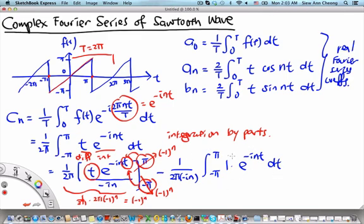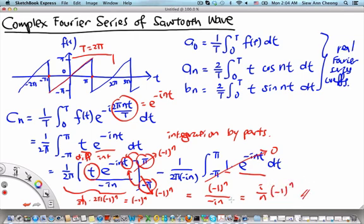Now for the second integral: since we differentiated t to get 1, we are left with integrating the periodic function e^(minus i nt) over one full period, and this integral vanishes — it becomes 0. Bringing back the minus i n factor in the denominator, c_n equals (minus 1)^n over (minus i n), which can be written more compactly as i over n times (minus 1)^n. This is the complex Fourier series coefficient, which is much easier to obtain because it is much easier to integrate or differentiate complex exponentials.